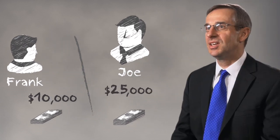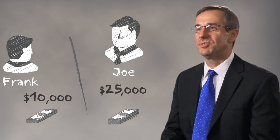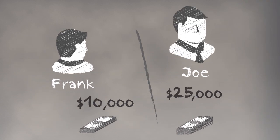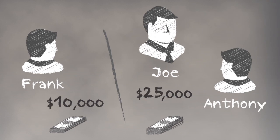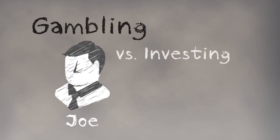If Joe is lucky and the stock goes up, then he'll be going back to Frank for advice in the future. If Joe is unlucky and the stock goes down, maybe Joe will get his advice elsewhere next time. Joe's actions sound a lot more like gambling than investing. He's making short-term bets without keeping his long-term financial future in mind.